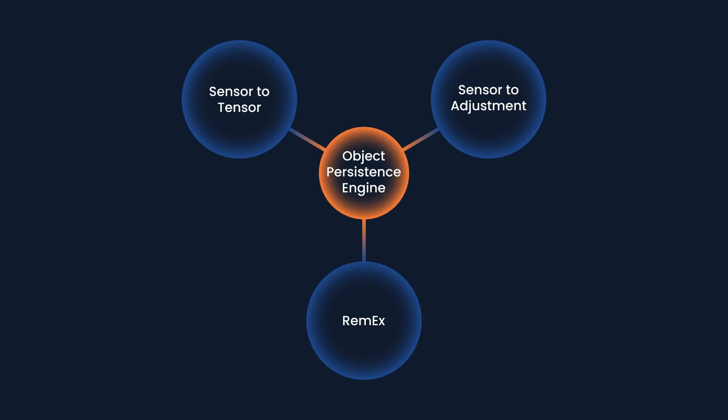Our state-of-the-art early fusion approach preserves the complementary strengths of different sensor modalities and progressively fuses them, along with map information, into a common view that allows us to produce high-quality detections of actors like pedestrians, vehicles, and cyclists in full 3D and at very long ranges.